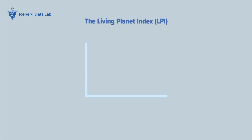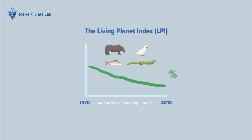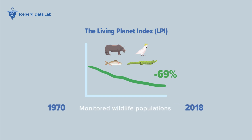The Living Planet Index, which tracks populations of mammals, birds, fish, reptiles, and amphibians, reveals an average 69% decrease in monitored wildlife populations since 1970.